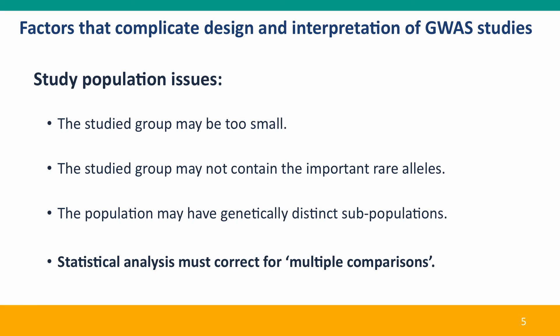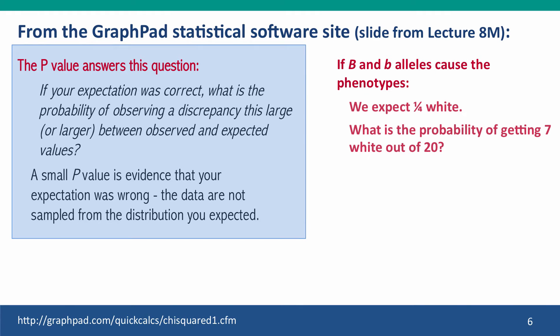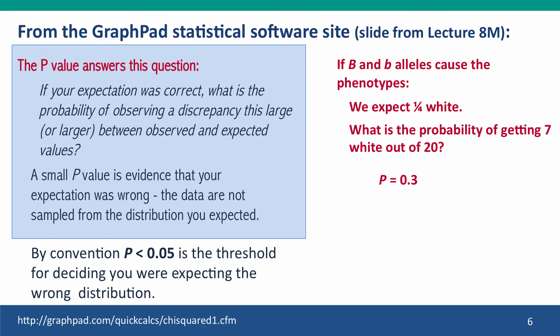And finally, this is an enormous problem: statistical analysis must correct for what are called multiple comparisons. I'll refresh your memory about what we discussed in the previous module. The use of statistical tests to assign a p-value — a threshold for deciding whether your results differ from the null hypothesis. The standard threshold is that the probability that your hypothesis is wrong has to be less than 0.05, or less than 1 in 20, before statisticians generally accept that the hypothesis should be discarded.